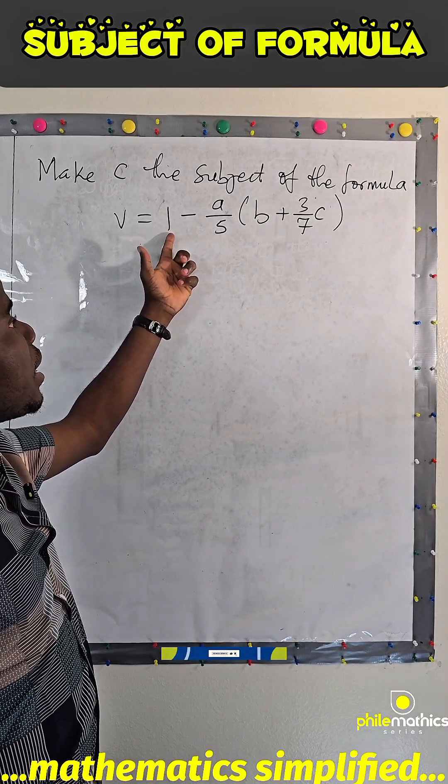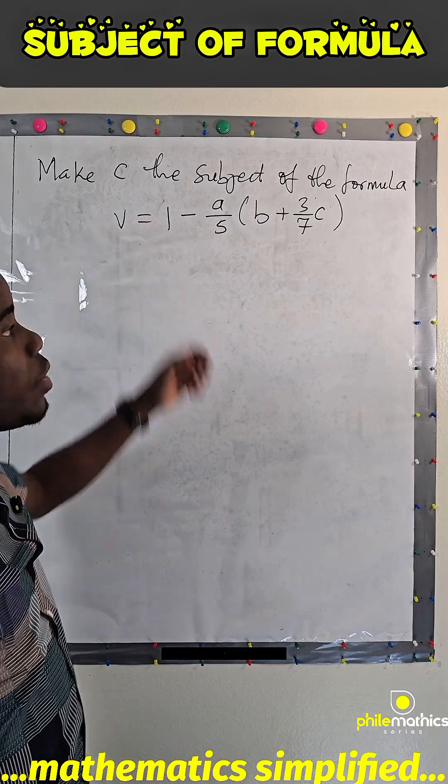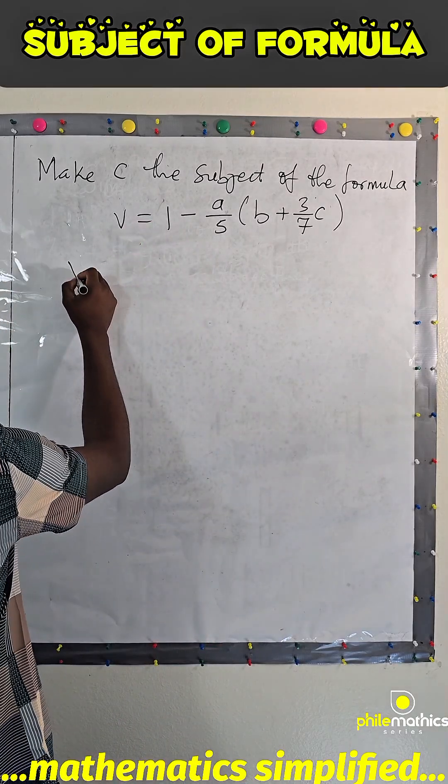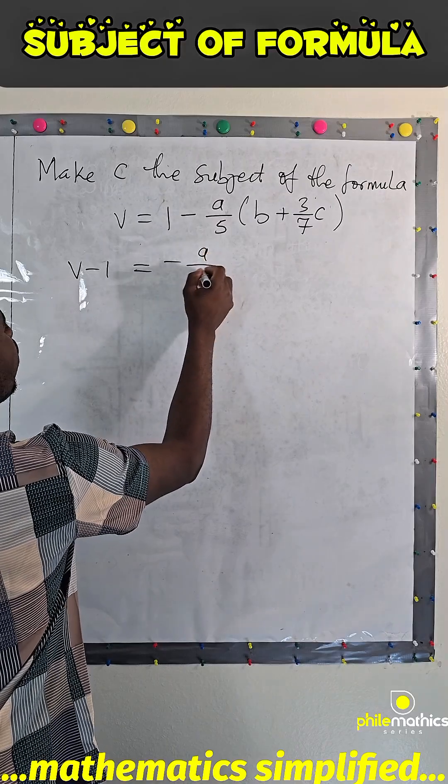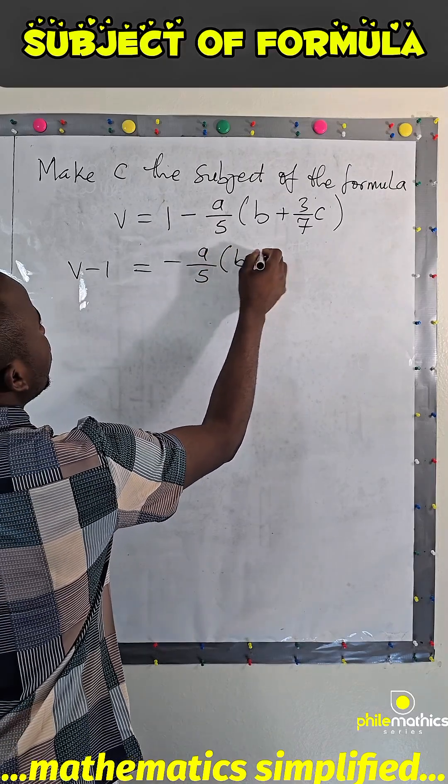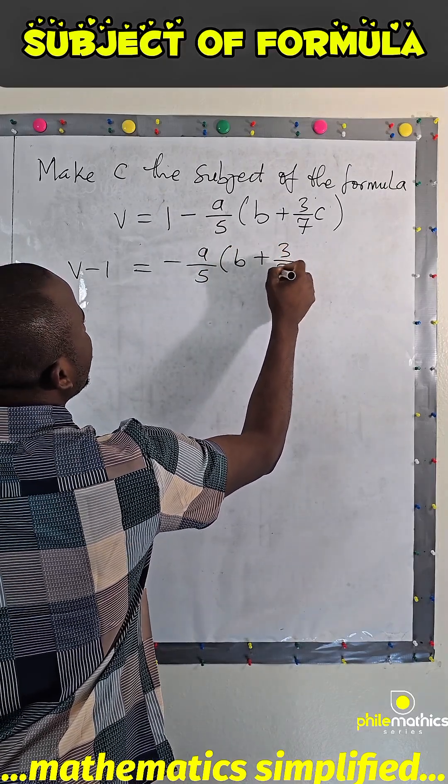we can start by taking this one to the left-hand side, so that we have V minus 1 equals minus A over 5, B plus 3 over 7, C.